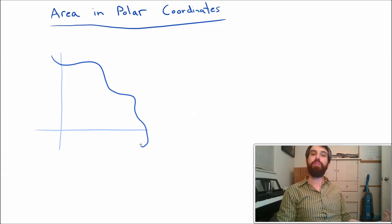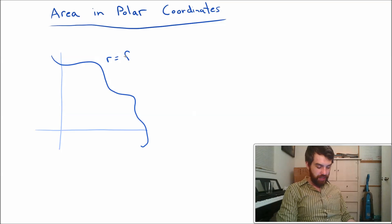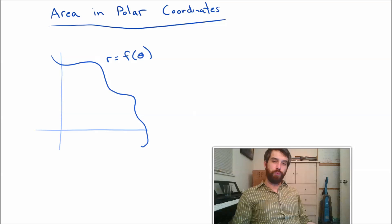For instance, let me suppose that I just have some random curve that I'm putting down. I'm imagining that I've given this curve in polar, that my radius at any given point is some function of theta. So I'm going to write it F of theta.